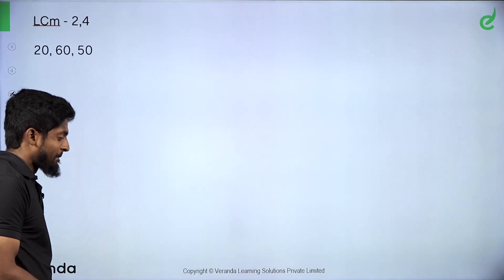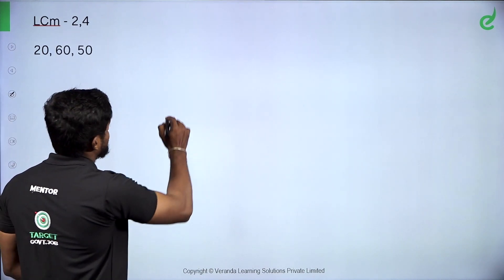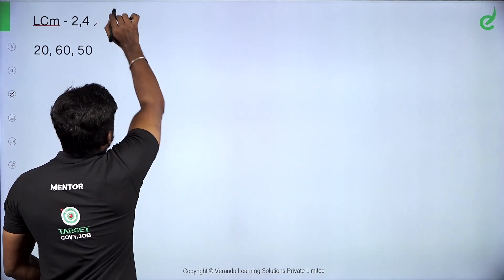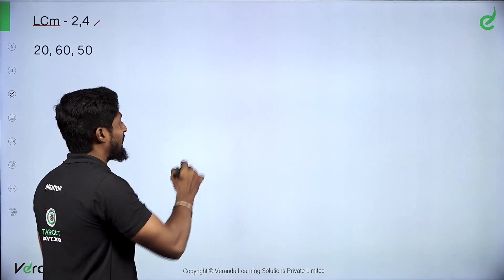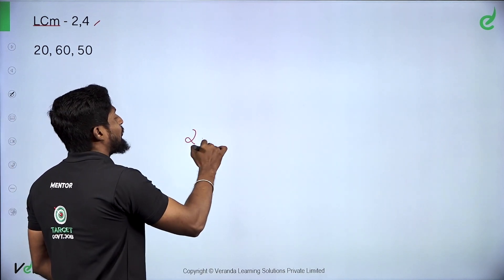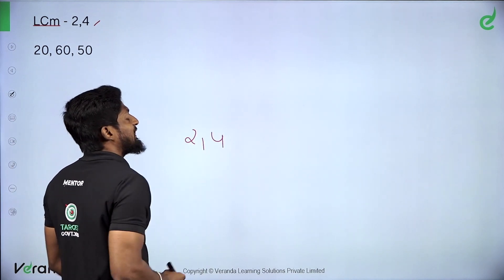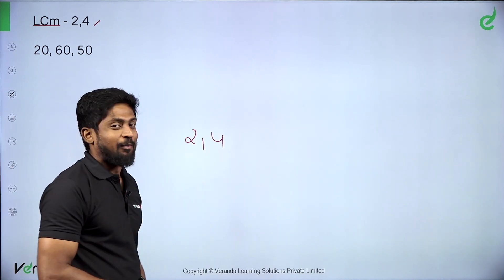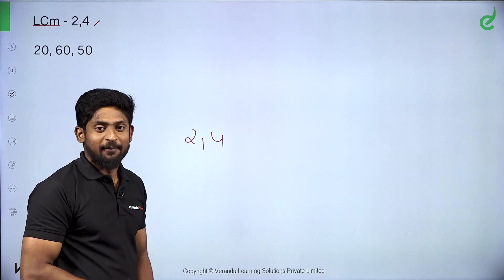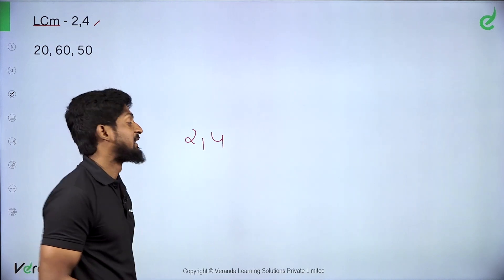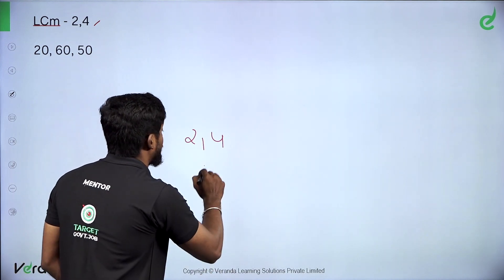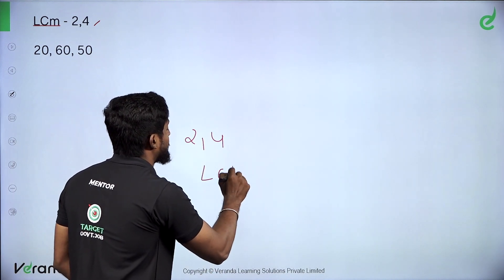Next sum — LCM. What is LCM? Let's take the numbers 2 and 4. Each number: 4 can be divided by both 2 and 4. That means LCM is 4.